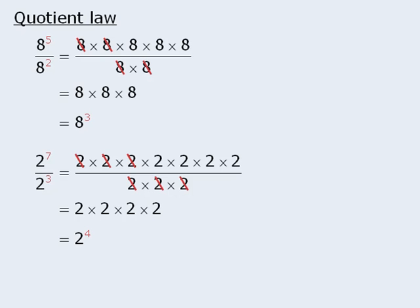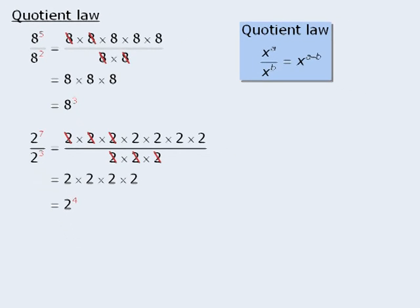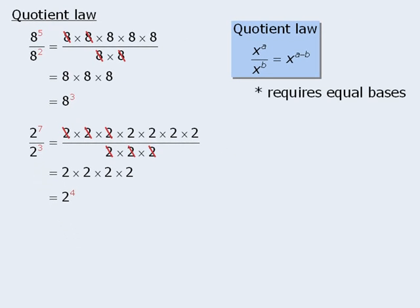To generalize these results, we can say that x to the power of a divided by x to the power of b will equal x to the power of a minus b. Please note that, like the product law, the quotient law also requires that the two bases are equal.